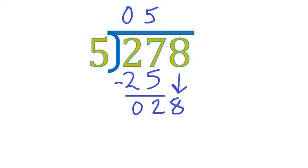8 comes down next. 28. 5 going into 28. Well, that's almost the same as 5 going into 27, and so we're going to have 5 times 5 yet again. 5 times 5 is 25, and we subtract that. 8 minus 5 is 3. 2 take away 2 is nothing.